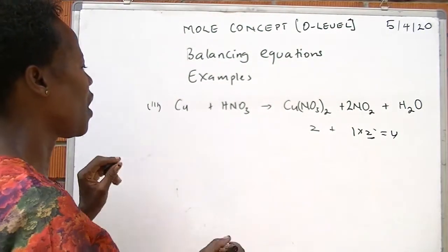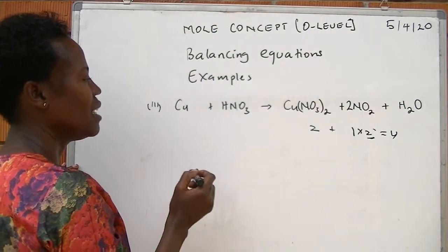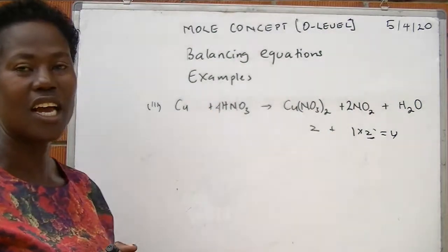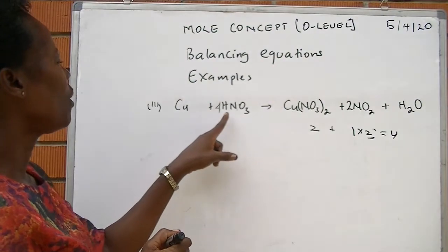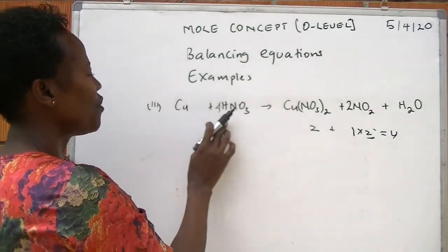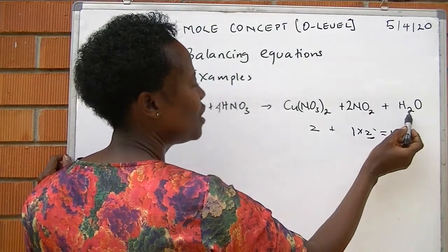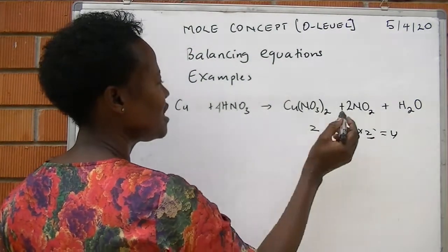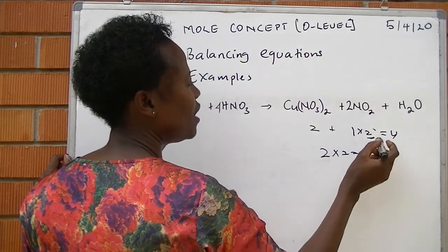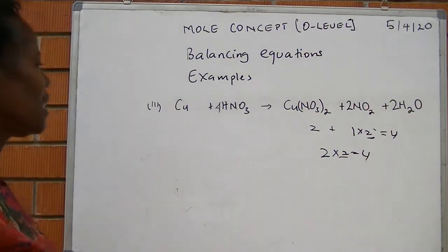With four in front of nitric acid, we now have four nitrogen atoms on the reactant side to match. Back to hydrogen: we have four hydrogens on the reactant side, but only two times one equals two on the product side. We multiply two by two to get four, and place two in front of water on the product side.